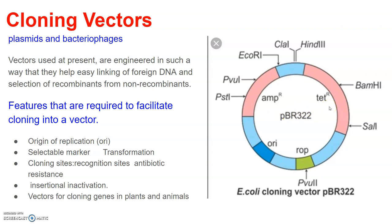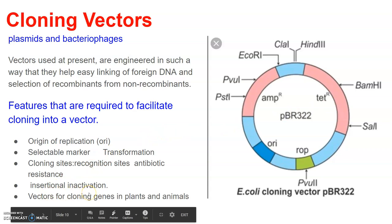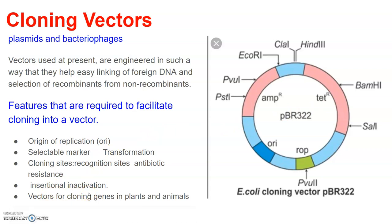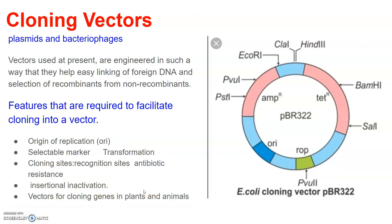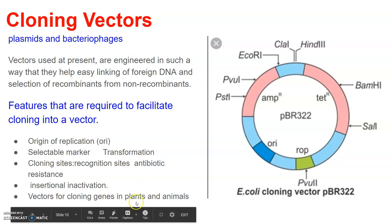Selection of recombinants due to inactivation of antibiotic resistance is a complex process because it requires simultaneous plating on two plates having different antibiotics. Therefore, alternative selectable markers have been developed which differentiate recombinants from non-recombinants on the basis of their ability to produce color in the presence of a chromogenic substrate. In this method, a recombinant DNA is inserted within the coding sequence of an enzyme, beta-galactosidase, resulting in inactivation of the enzyme, which is referred to as insertional inactivation. The presence of a chromogenic substrate gives blue-colored colonies if the plasmid in the bacteria does not have an insert, whereas the presence of an insert results in insertional inactivation of beta-galactosidase and the colonies produce no color, identifying them as recombinant colonies.